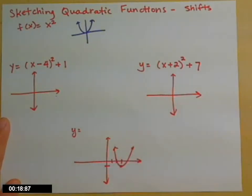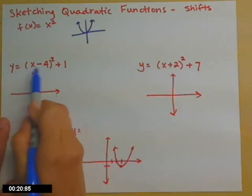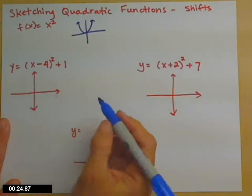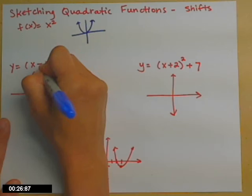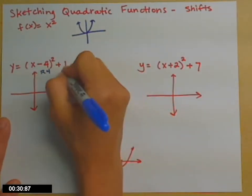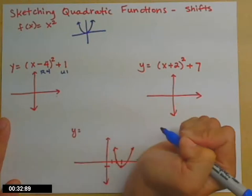So if I look at y equals x minus 4 quantity squared plus 1. That minus 4 is inside before you square, so that's a shift to the right, 4 spaces. The plus 1 on the outside is a shift up 1.